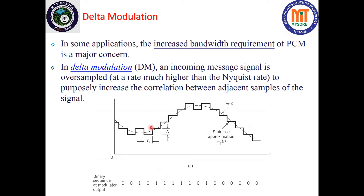In this way delta modulation takes place, where quantization plays an important role. We sample the signal at a rate much higher than the Nyquist rate, then quantize it in only two levels — plus delta and minus delta — and then encode: if the signal is going in the positive direction, bit one; if the signal is decreasing, bit zero.